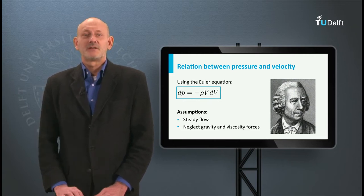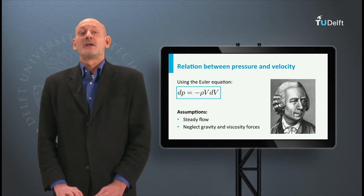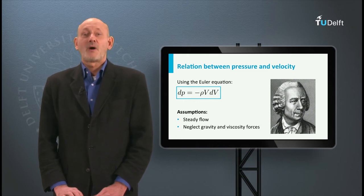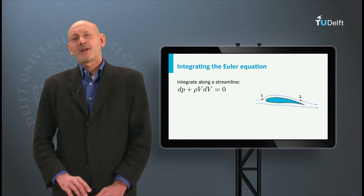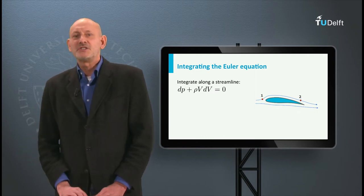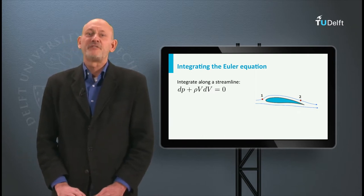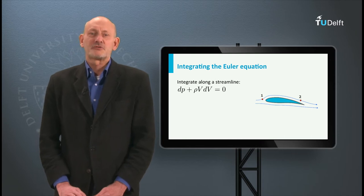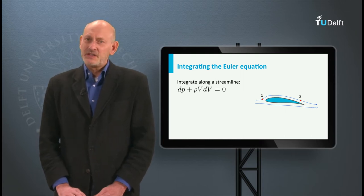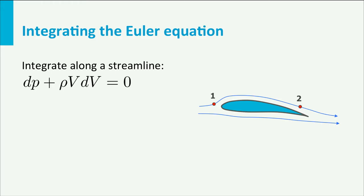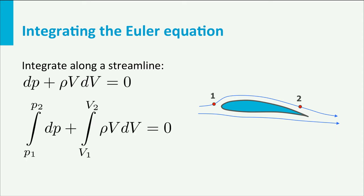The assumptions in the derivation of this relation were steady flow and neglect of gravity and viscosity forces. Now let us integrate the Euler equation dP + ρV dV = 0 along a streamline between points 1 and 2. So we get the integral of dP from P1 to P2 plus the integral from V1 to V2 of ρV dV = 0.